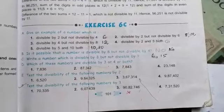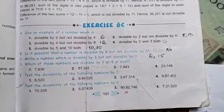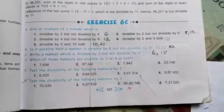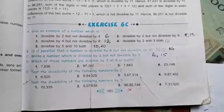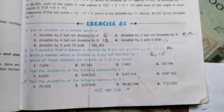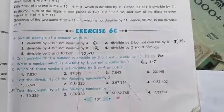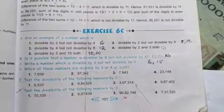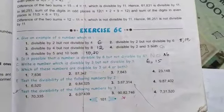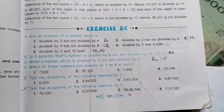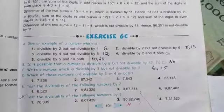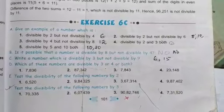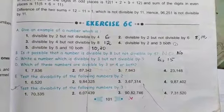For divisible by five and ten both, the rule is the last digit should be zero, so it will be divisible by both two and five. Ten, twenty, thirty — many numbers are there, write any one. Then part B: is it possible that a number is divisible by eight but not divisible by four? The answer is no.